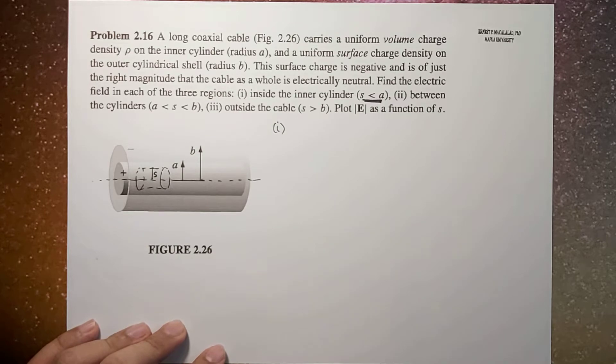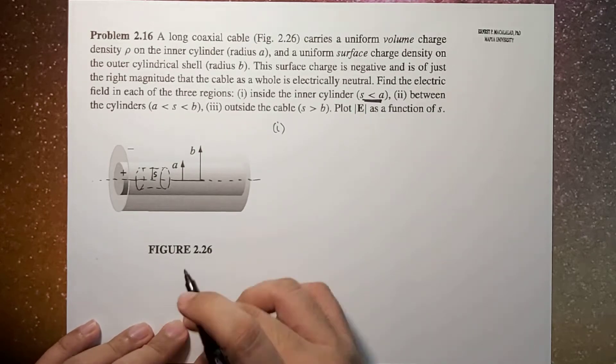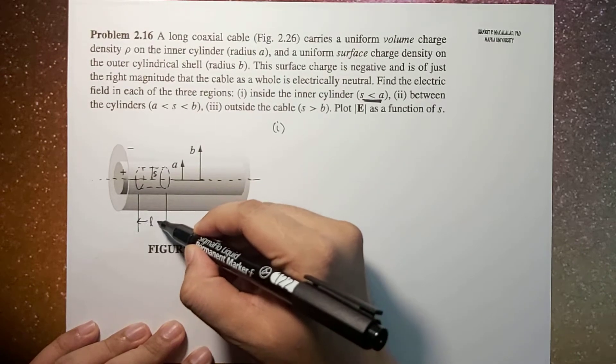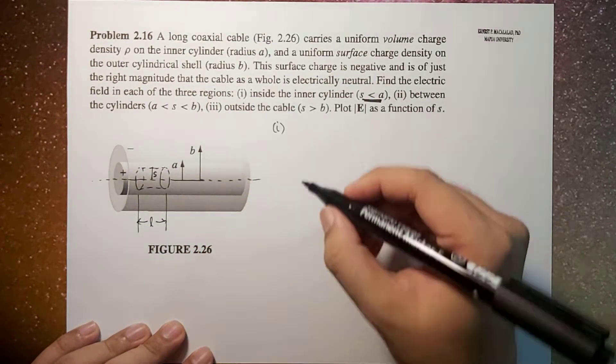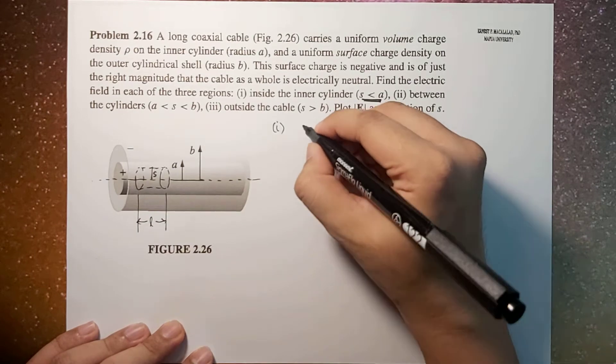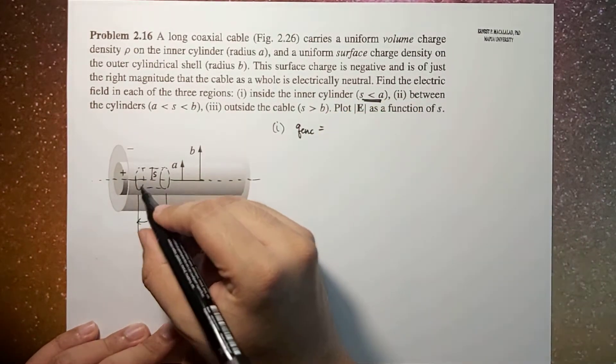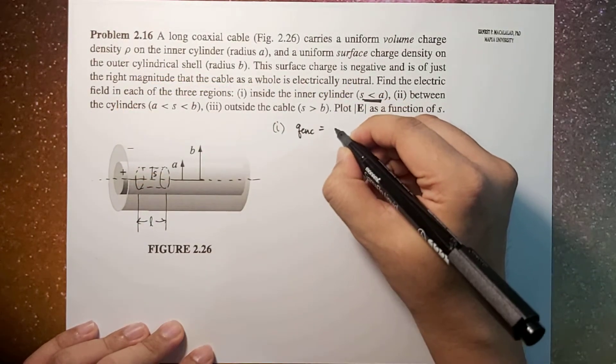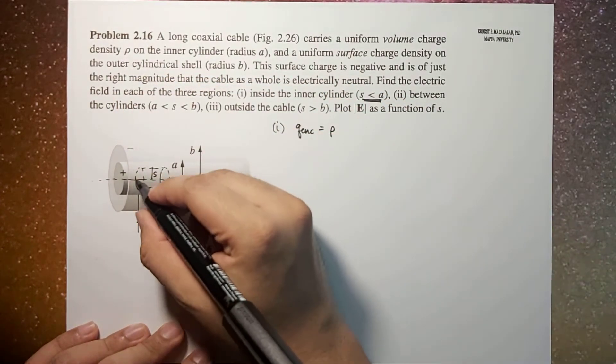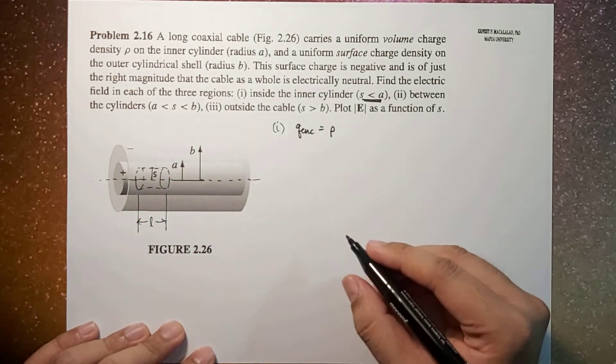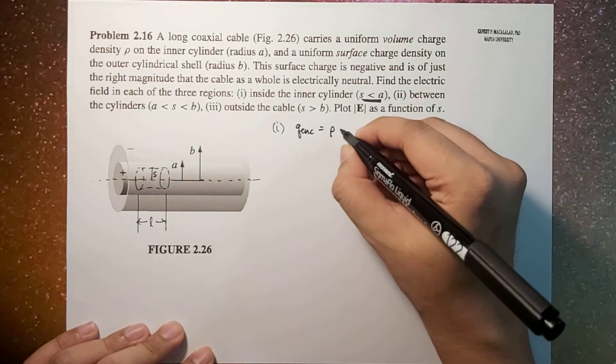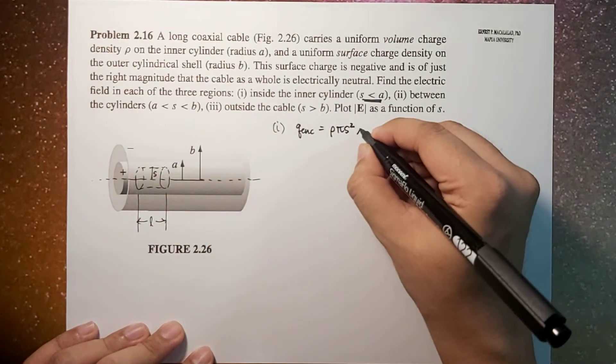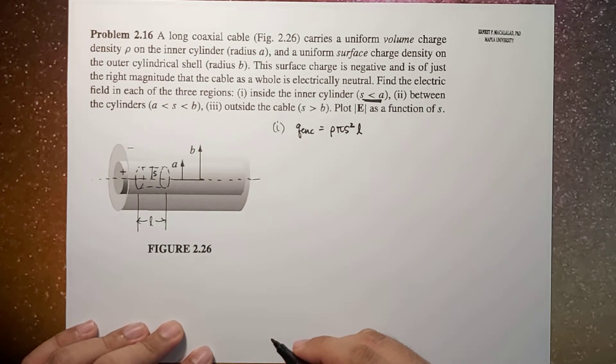From here, if we're going to let this as our length temporarily, the Q enclosed will now be what? Q enclosed would be ρ times the volume of the cylinder, which is π S squared times L.